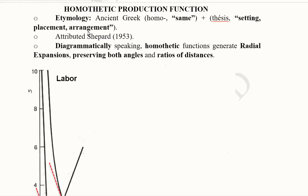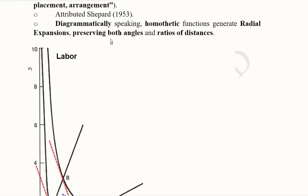Homothetic functions retain a certain pattern. This is attributed to Shepard (1953). Diagrammatically speaking, homothetic functions generate radial expansions, preserving both angles and ratios of distances.